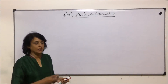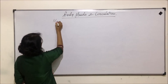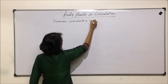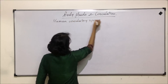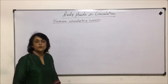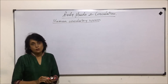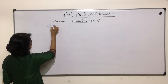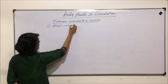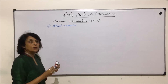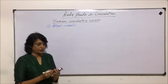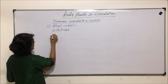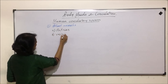We will start with the human circulatory system. We will talk about three things first and then understand how this system works. The first thing we are starting with is blood vessels. In humans there are three types of blood vessels: arteries, veins, and capillaries.